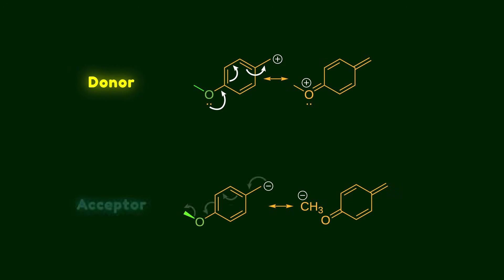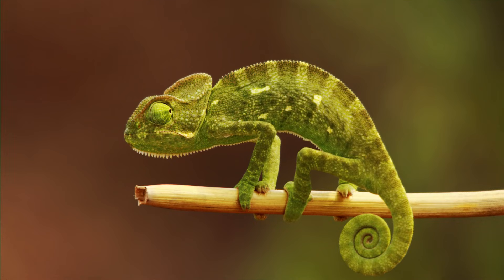But it also could be an acceptor. Just like a chameleon that changes its color in different environments, the methoxy group and many other functional groups can change depending on the reaction conditions. In this video, I'm gonna walk you through this kind of chameleonic behavior of functional groups.